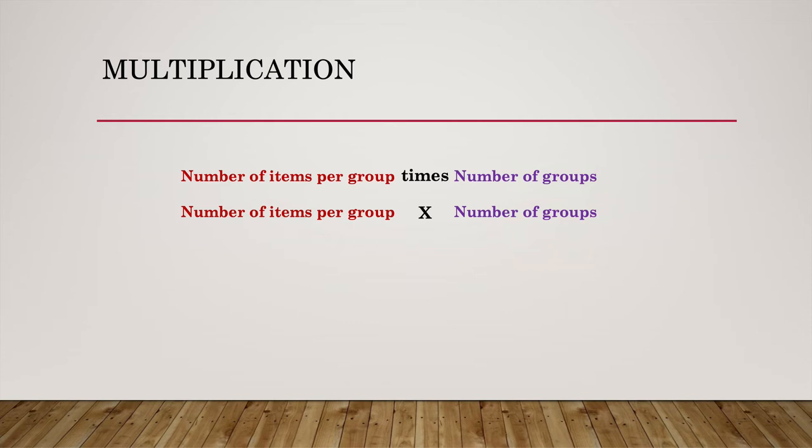Okay, so in summary, we can say multiplication is number of items per group times number of groups. Very good. Number of items per group times number of groups. Or for times you can use ×. And that's it. That's all there is to multiplication. It's almost like adding, because if you just added items, you get the same result as if you did a multiplication.